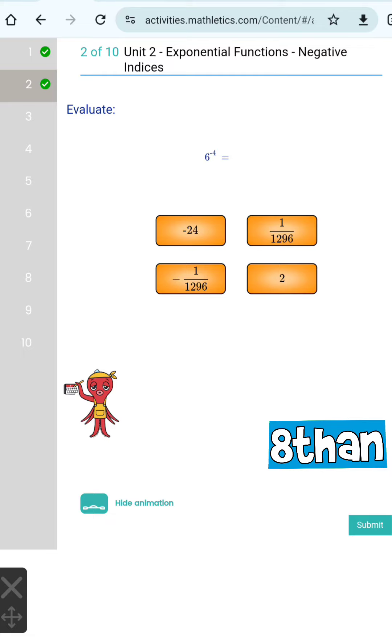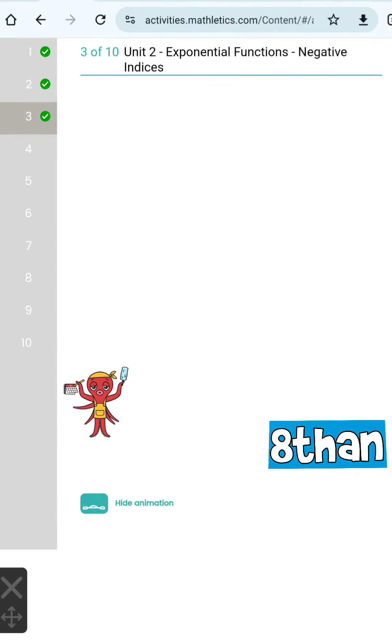6 to the power of negative 4 means that it's just going to be the reciprocal of 6 to the power of 4, which gives me the answer 1 over 1296.